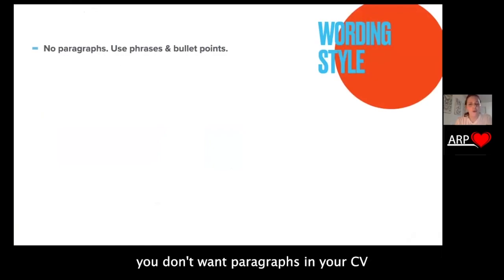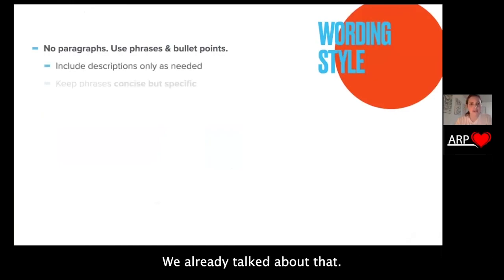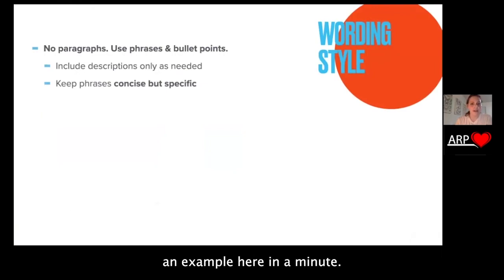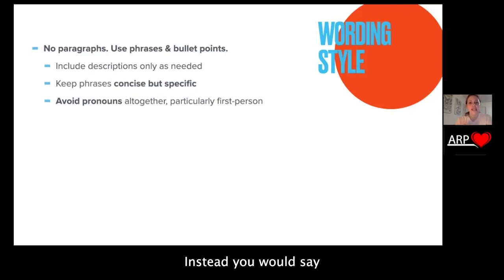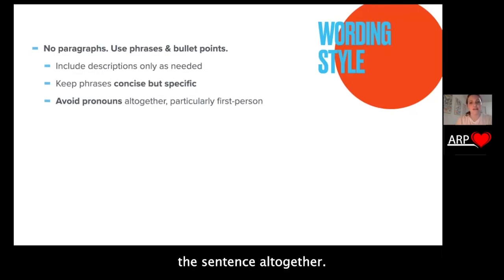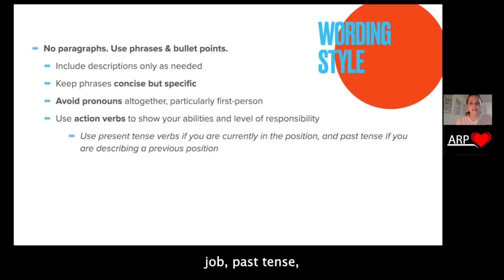Wording style. You don't want paragraphs in your CV or resume — you want this to be skimmable. You're not even going to have complete sentences; you're going to have phrases that are bullet-pointed. Include descriptions only as needed. Keep your phrases concise and as specific as possible. Avoid pronouns altogether — so instead of saying 'I was in charge of blah blah,' you would say 'Led blah blah.' You take out the noun part of the sentence altogether. Start each bullet point phrase with an action verb — present tense if you're still doing that job, past tense if it's something you did in the past.